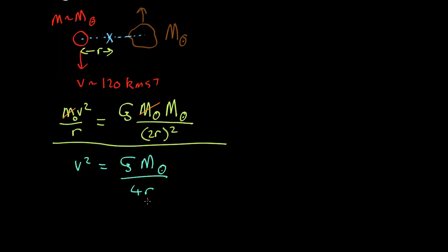Now we know everything here apart from r, how far apart they are, so bring that up to the side of the equation. You end up with r equals G M sun over 4v squared.